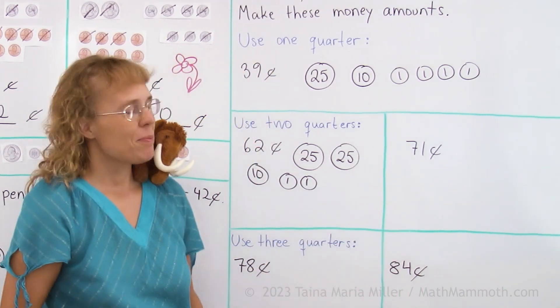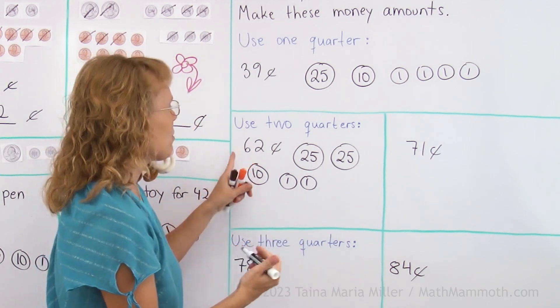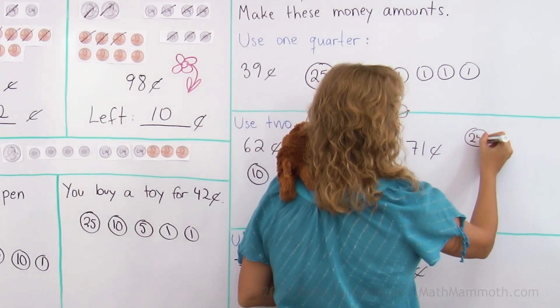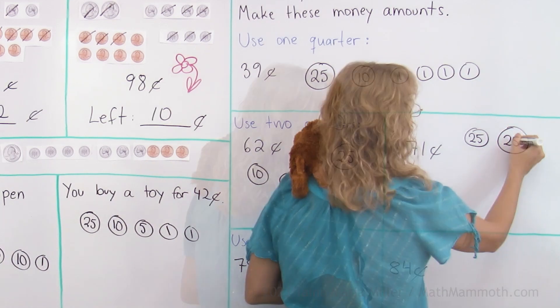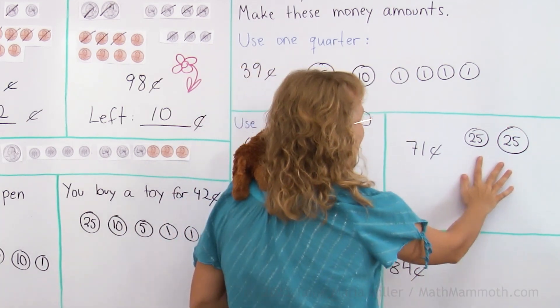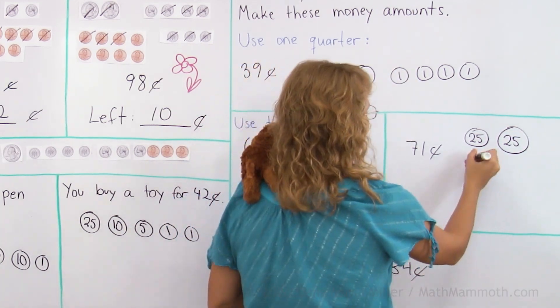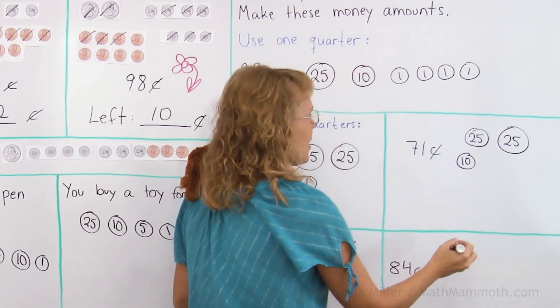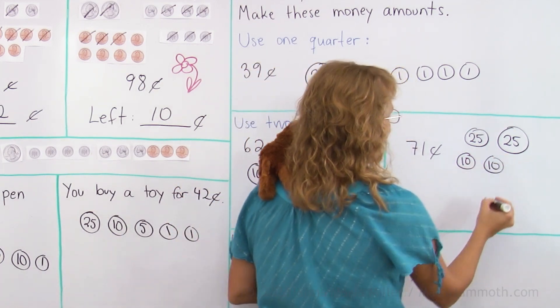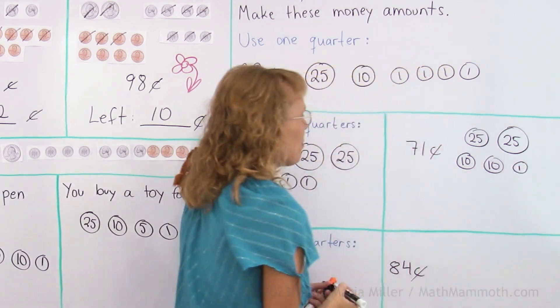71 cents, that's pretty close to this one. We use two quarters again, it says quarter and quarter. Now that is 50, 10, 10 more, 60, 10 more, 70, and then just a cent, there we go.